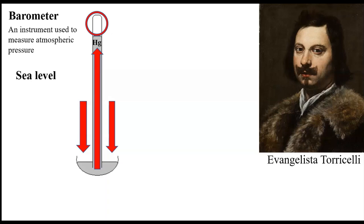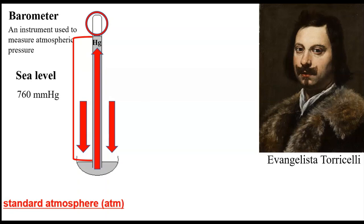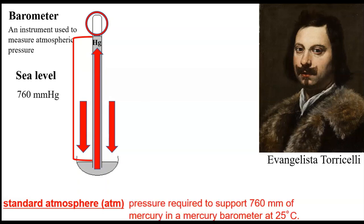The height of the mercury column indicates how much atmospheric pressure is pushing down. Torricelli was also the first person to create an artificial vacuum — an area with no particles and no pressure. At sea level, with one atmosphere of pressure, the mercury column is always 760 millimeters of mercury high. This is still used as a unit of pressure today. A standard atmosphere is defined as the pressure required to support 760 millimeters of mercury in a mercury barometer at 25 degrees Celsius.